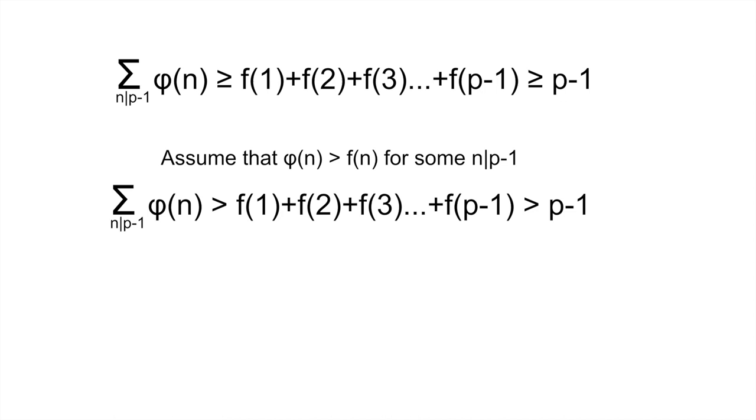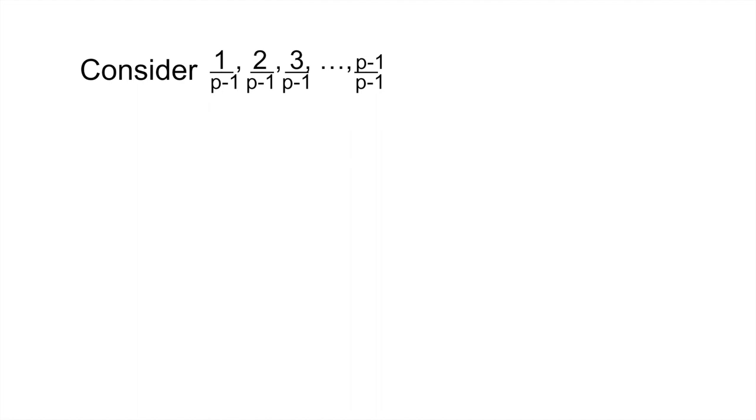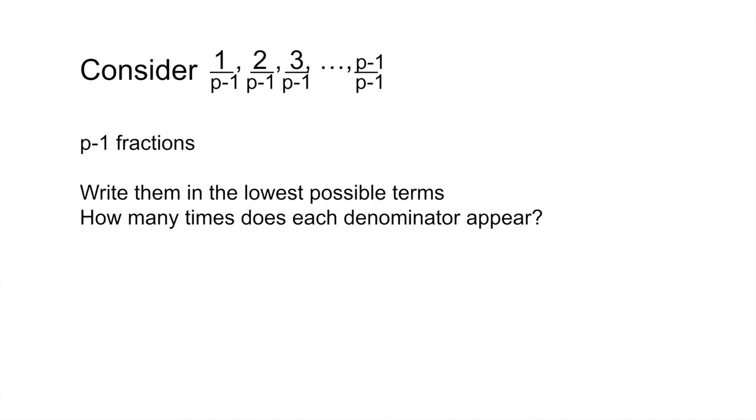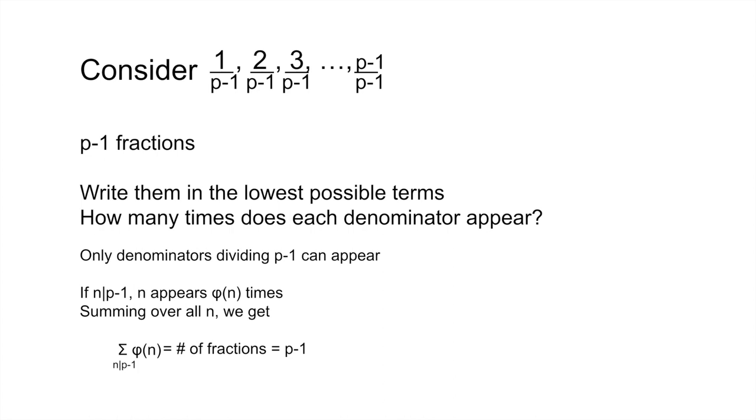Now, here, in my opinion, is the coolest part of the proof. Consider the set of fractions 1 over p minus 1, 2 over p minus 1, all the way up to p minus 1 over p minus 1. Clearly, there are p minus 1 of them. Now, write them each in lowest terms and count how many times each denominator will appear. Clearly, only denominators that divide p minus 1 can appear. Of these, each denominator n will appear exactly phi of n times because if the numerator is not coprime to n, it could be further simplified and n would not be the final denominator. If it is coprime, the fraction cannot be further simplified. This means that the total number of fractions to appear is equal to the sum over divisors of p minus 1 of phi of n. But we already know that there are exactly p minus 1 fractions. So the sum over divisors of p minus 1 of phi of n is equal to p minus 1. But this contradicts that the sum over divisors of p minus 1 of phi of n is greater than p minus 1, which we found earlier.